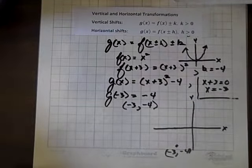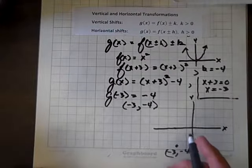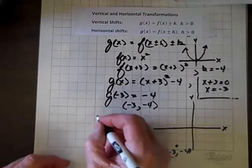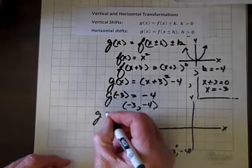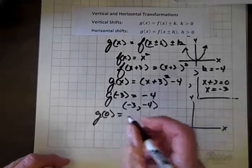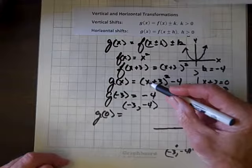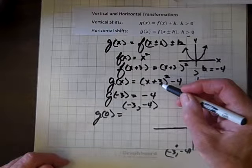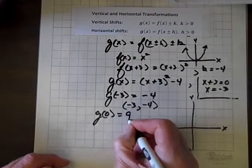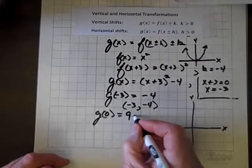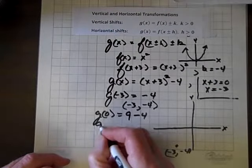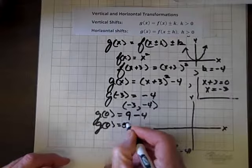Now, let's go a little farther. Let's find out what the y-intercept is. So we'll evaluate g of zero. And replacing x with zero, we just have 3 squared, which is 9. We still have our friend negative 4 there. So g of zero equals 5.